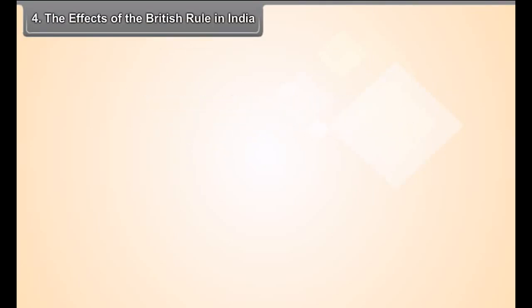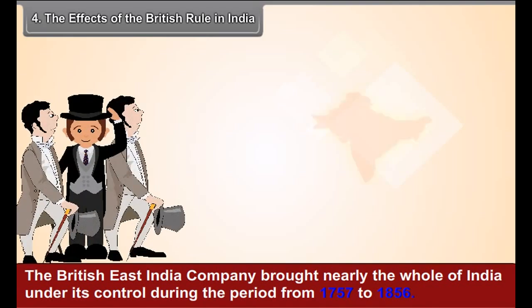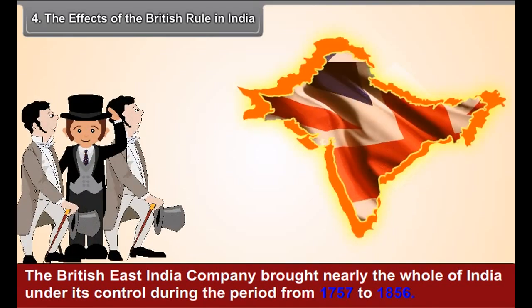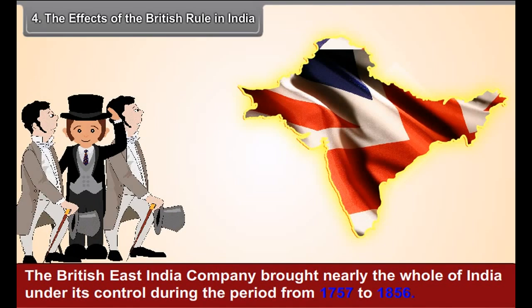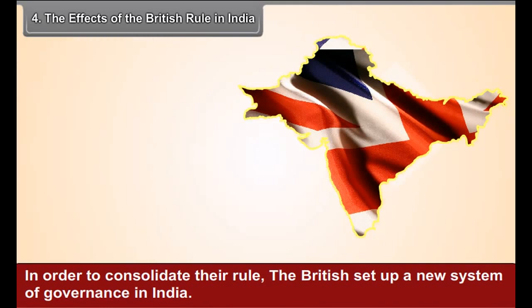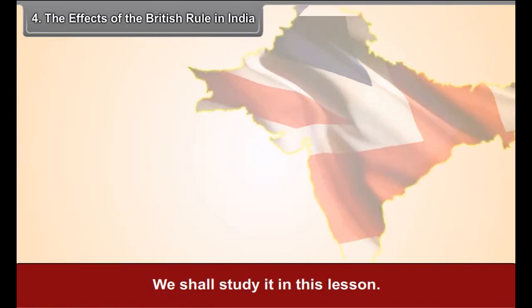Chapter 4: The Effects of the British Rule in India. The British East India Company brought nearly the whole of India under its control during the period from 1757 to 1856. In order to consolidate their rule, the British set up a new system of governance in India. We shall study it in this lesson.